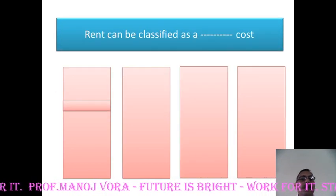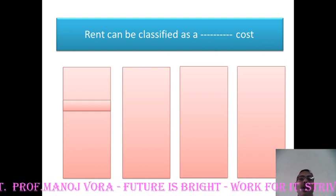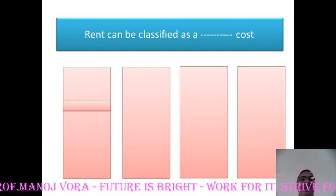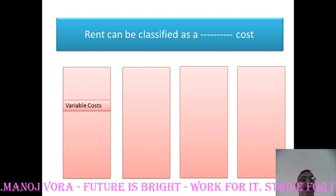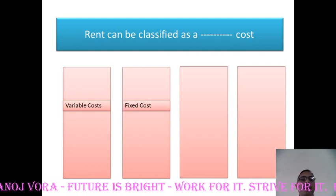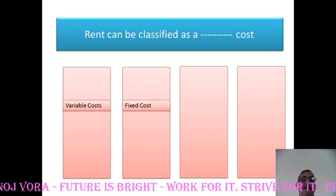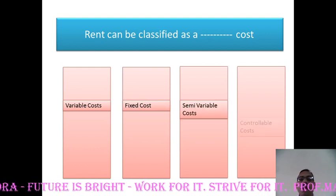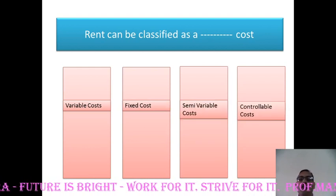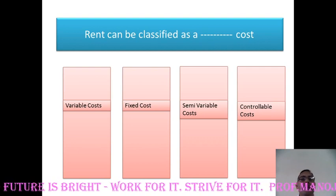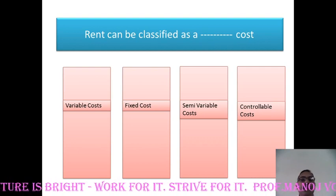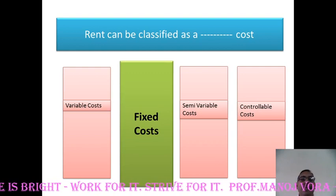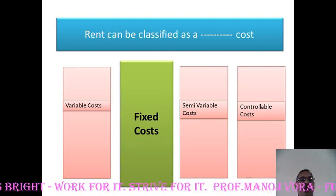Your next question: rent can be classified as a dash cost — your first option is variable cost, second option fixed cost, third option semi variable cost, and the fourth option controllable cost. Here is your right answer: rent will be considered or classified as a fixed cost.